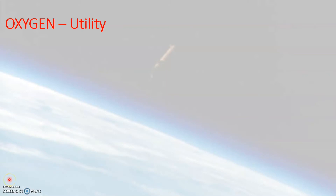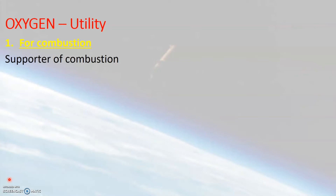Now let us see the use or utility of oxygen in the air. We just learned that oxygen gas is very much essential for the process of burning. So the first important use of oxygen is that it is a supporter of combustion, and therefore it is essential for the process of burning or combustion.